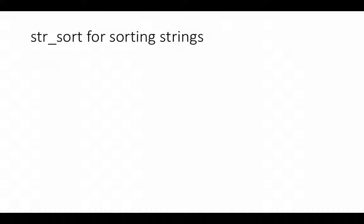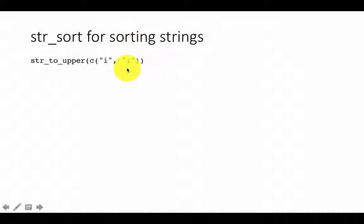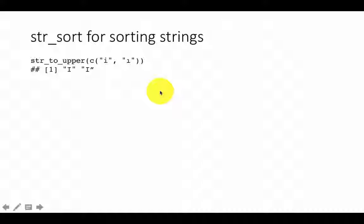Let's look at some more functions. We'll shortly look at str_sort for sorting strings, but before that let's look at str_to_upper. Here we are passing it two strings: the letter i, and a character that looks like the letter i but is actually a Turkish character. It converts each to the corresponding uppercase character. We've seen str_to_lower earlier; this is str_to_upper.